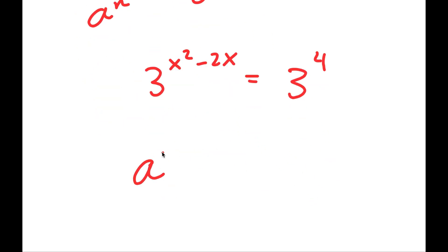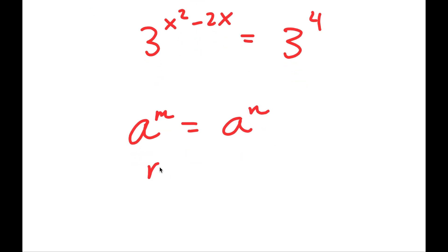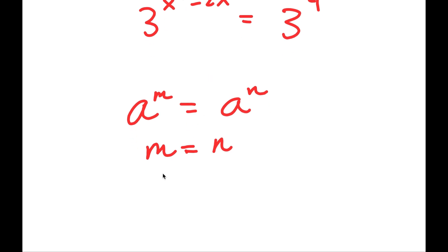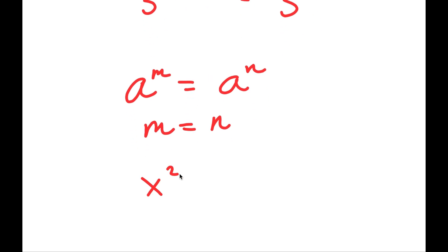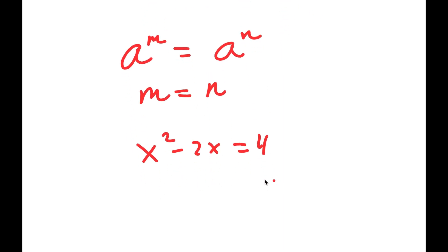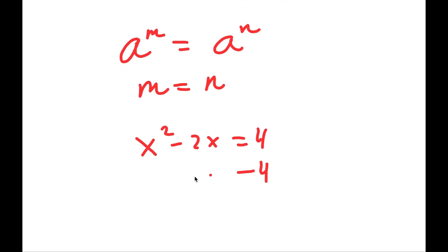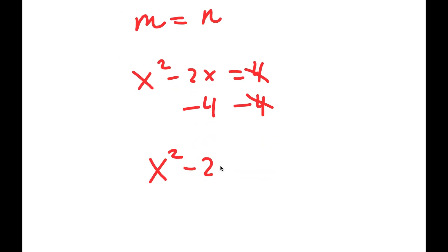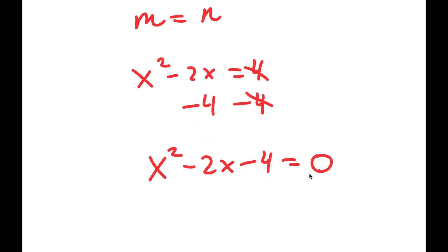Now if I have something in the form a to the power of m is equal to a to the power of n, this means m is equal to n. So this means x squared minus 2x is equal to 4, and if I subtract both sides by 4 I get x squared minus 2x minus 4 is equal to 0.